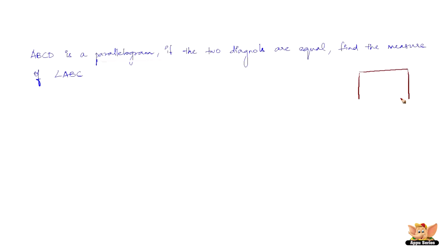So let us first draw ABCD, which is a parallelogram. Parallelogram means it is a four-sided closed figure where the opposite sides are parallel to each other. They will never meet if extended. That is what it means.